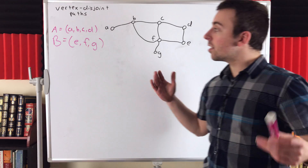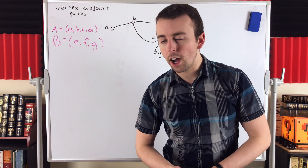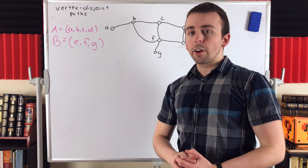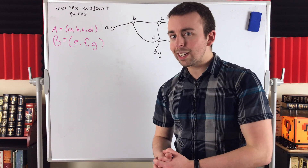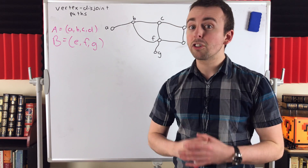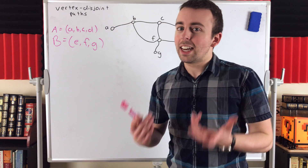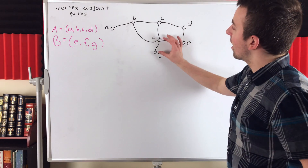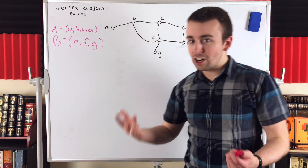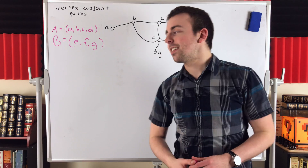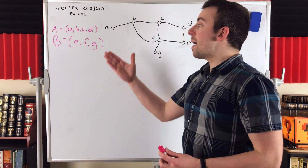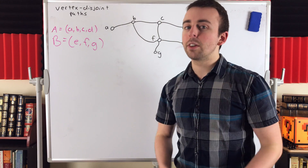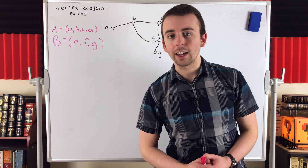They don't have any vertices in common. Of course, if two paths are vertex disjoint, then they are also edge disjoint, because an edge is defined by a pair of adjacent vertices. So if two paths have no vertices in common, they certainly have no edges in common.